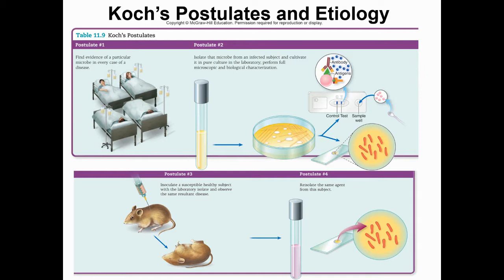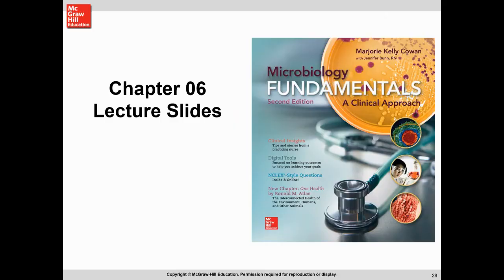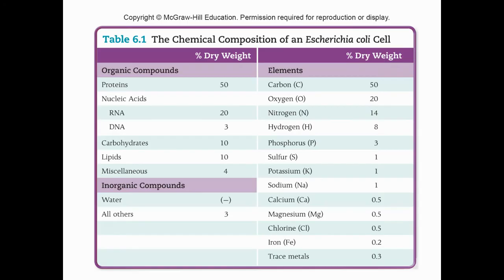Epidemiology involves terminology like epidemics, pandemics, and endemics — diseases always present in the population in background numbers but not in huge amounts. Chapter 6 on growth: you should know the organic compounds and what they're made of — proteins, nucleic acids, carbohydrates, lipids. These make up the vast majority of all living organisms. Carbohydrates contain carbon, hydrogen, oxygen. Proteins are made of amino acids with carbon, hydrogen, oxygen, and nitrogen from the amine group, and possibly phosphorus or sulfur depending on the amino acid.